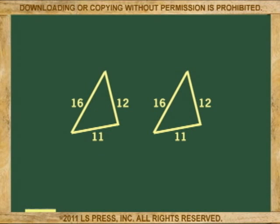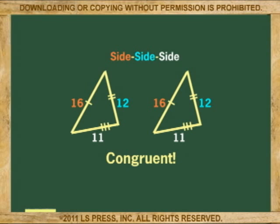If we determine that the corresponding three sides are equal, without even looking at the size of the angles, then we can say that the triangles are congruent because of side-side-side, or SSS for short.